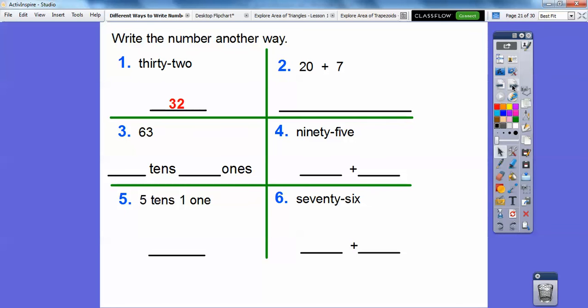How about this? 20 plus 7, okay? Well, 20 plus 7 is the same as 27. Notice how we wrote 20, remember, this is how we spell 20 right here.